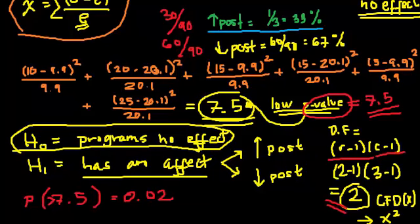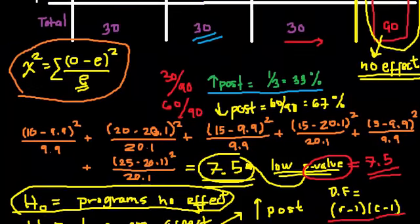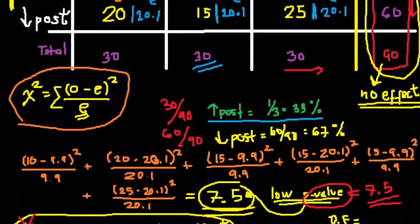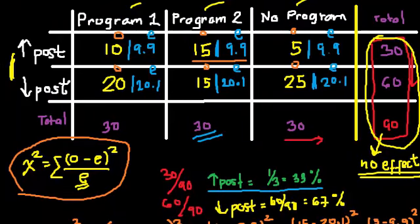And hence we need to reject the null hypothesis that the programs has no effect in favor of the alternative hypothesis. And hence programs has an effect compared to the distribution that has no effect. So either program 1 or program 2 has an effect.